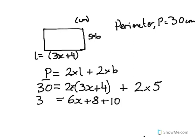So we now know that 30 equals 6x plus 8 plus 10. We add our numbers together, so we get that 30 equals 6x plus 18.